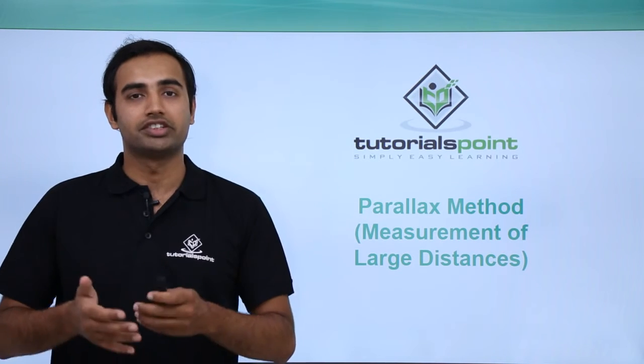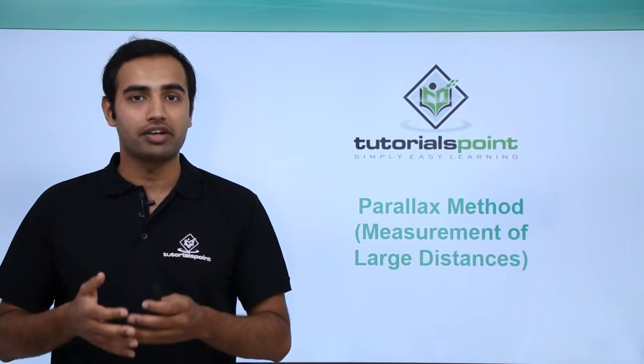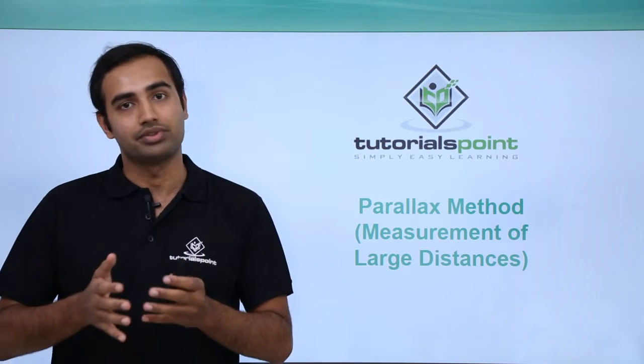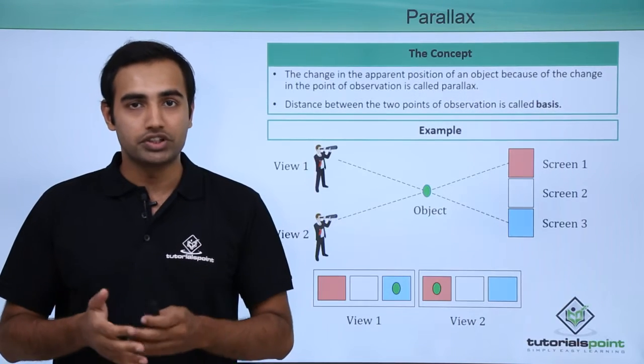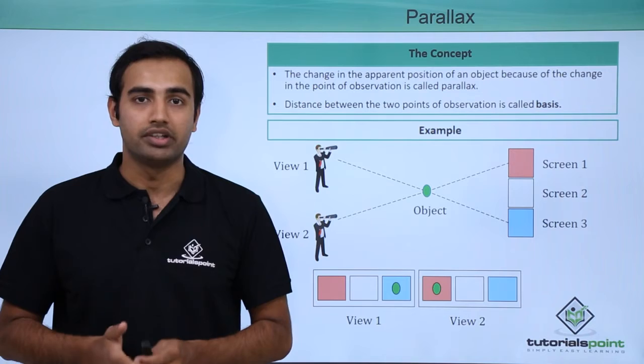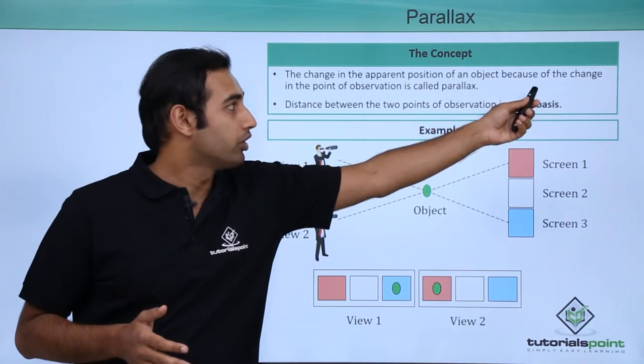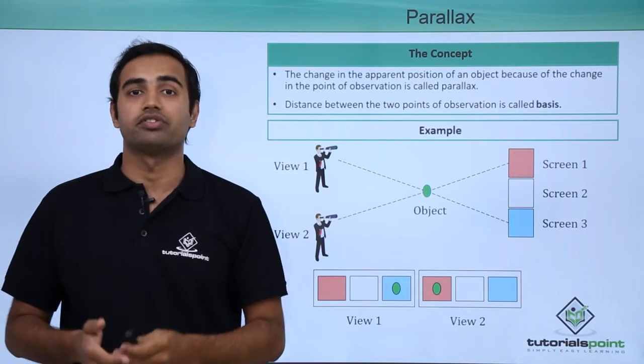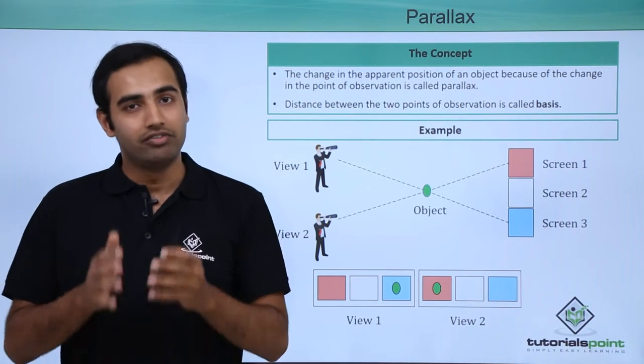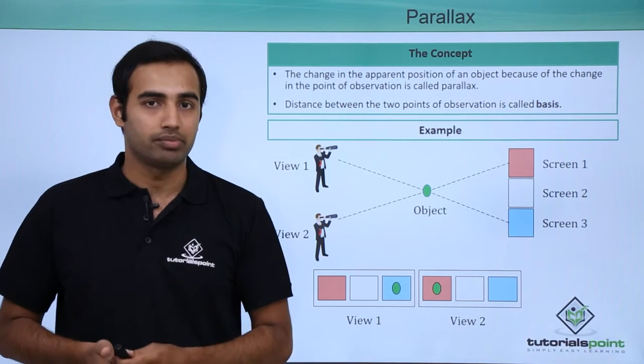Let's talk about the next topic which is parallax method and how we can estimate large distances using this method. So first of all we will try to talk about what is the meaning of parallax. The change in apparent position of an object because of the change in position of observation is called parallax. We will try to understand this statement by an example shown here.